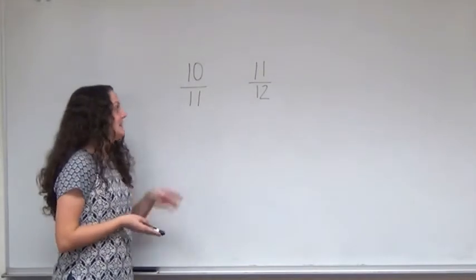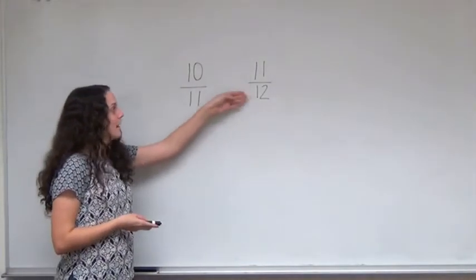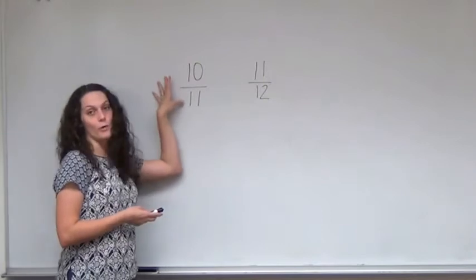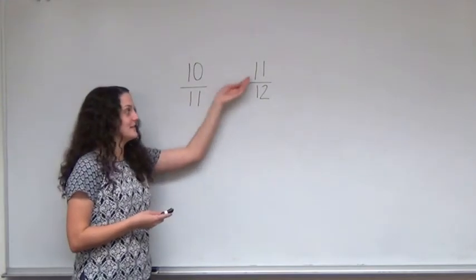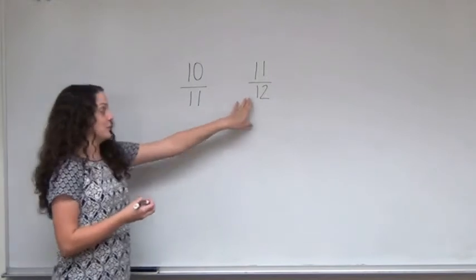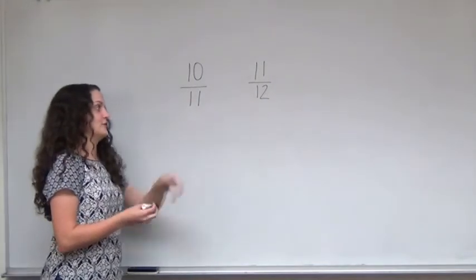I first noticed that each of them were one away from being a whole. So 10 is one away from 11, 11 is one away from 12. 11ths are also bigger than 12ths, which is good to know.